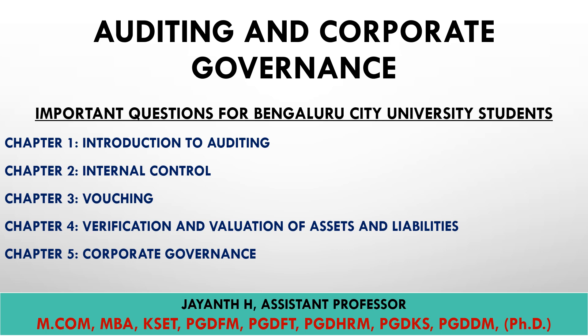When you look at the term auditing and corporate governance, here you are trying to cover five chapters. Chapter one is introduction to auditing, chapter two is internal control, chapter three is vouching, chapter four is verification and valuation of assets and liabilities, and chapter five is corporate governance. We will look after all the important areas and discuss probable questions for Bangalore City University students.